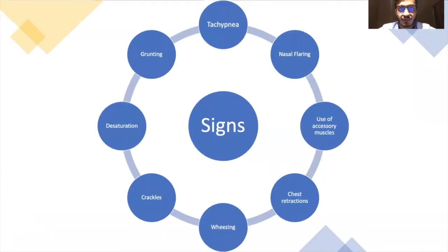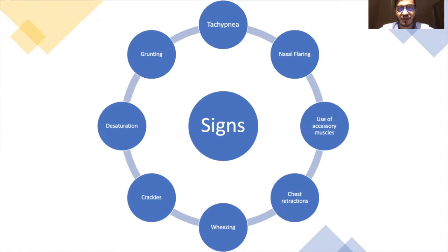The signs on presentation can be tachypnea, nasal flaring, chest retractions, wheezing, and crackles. As the disease progresses in severity, it can cause desaturation and grunting, showing respiratory distress.